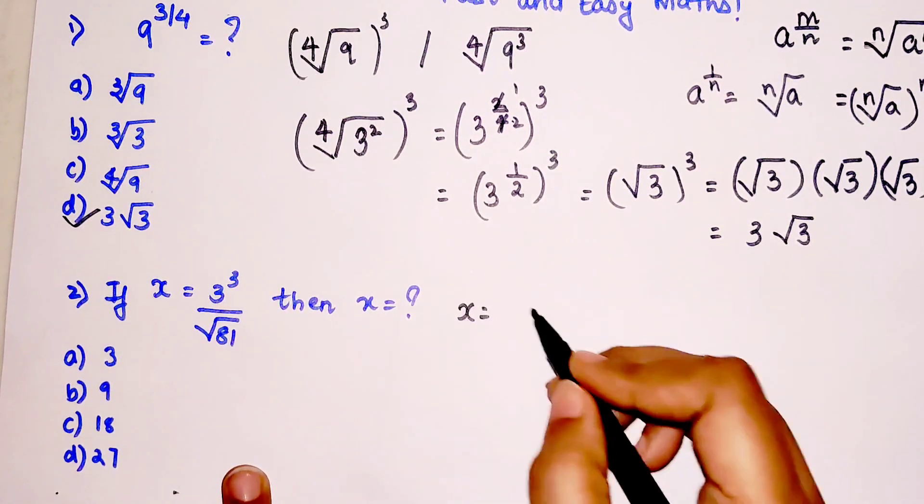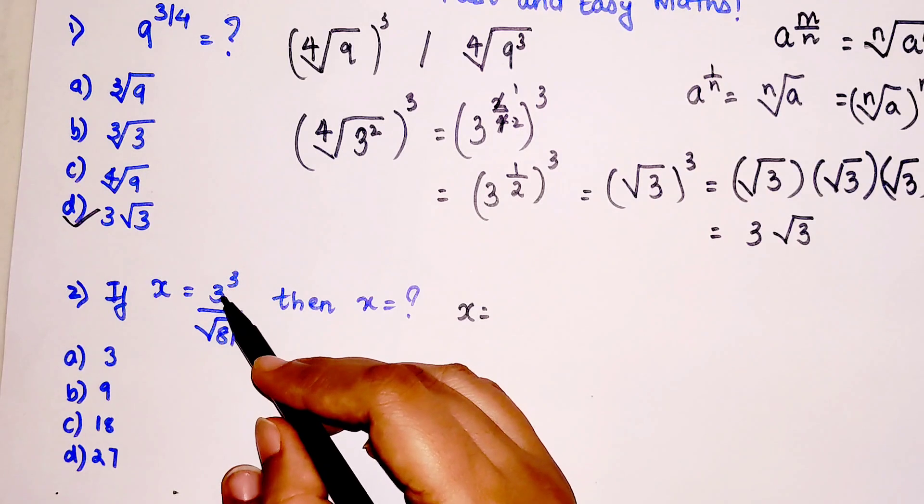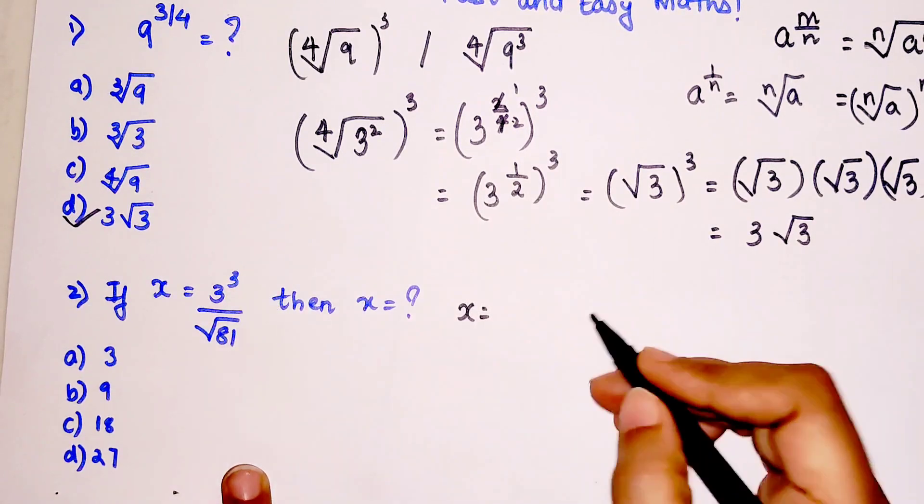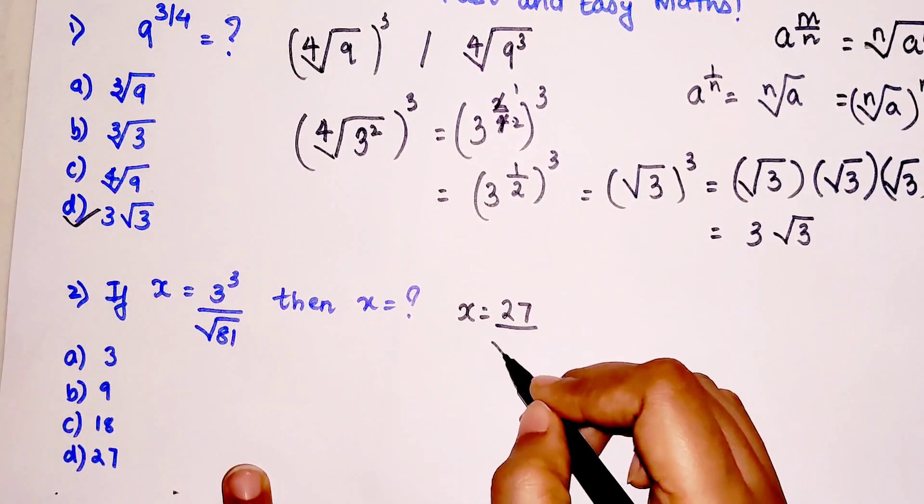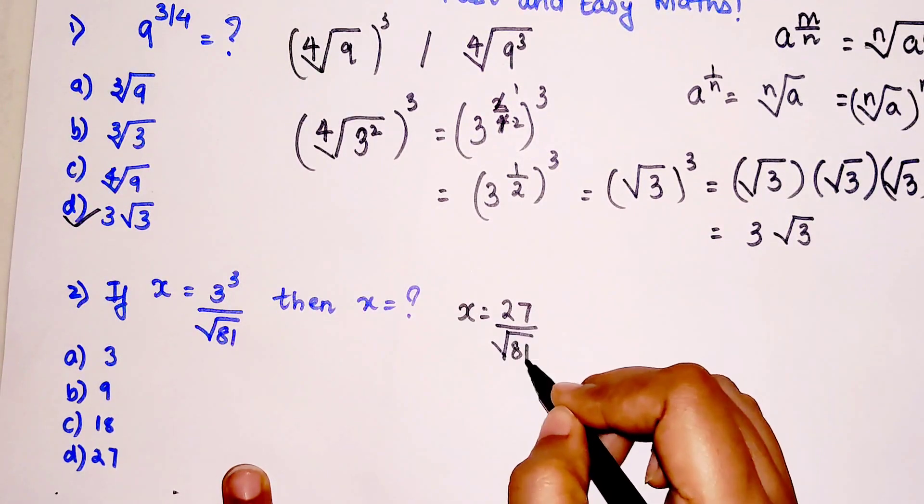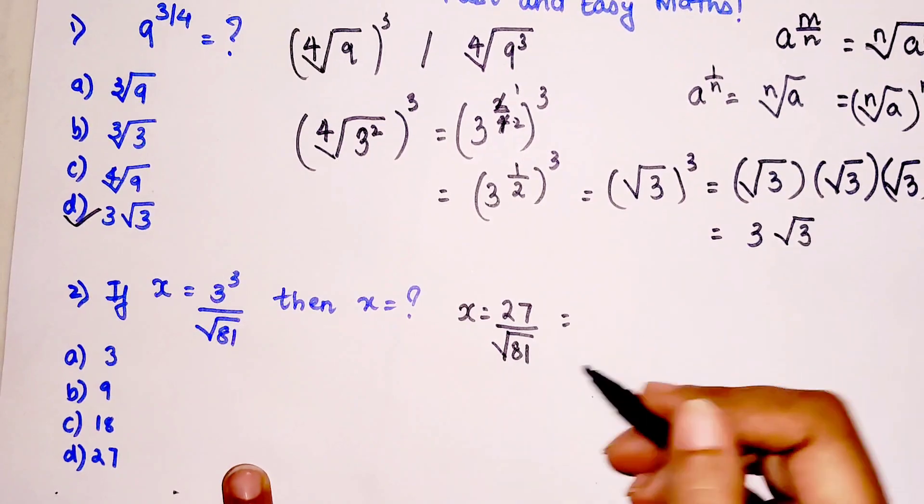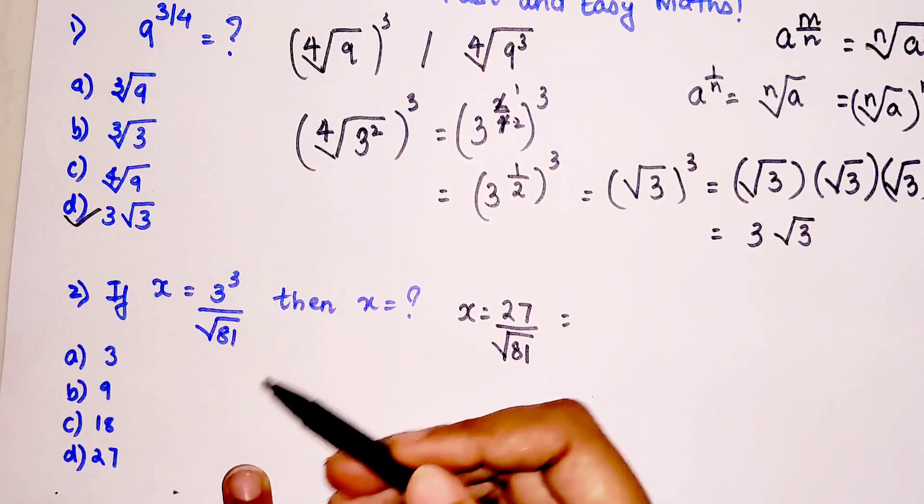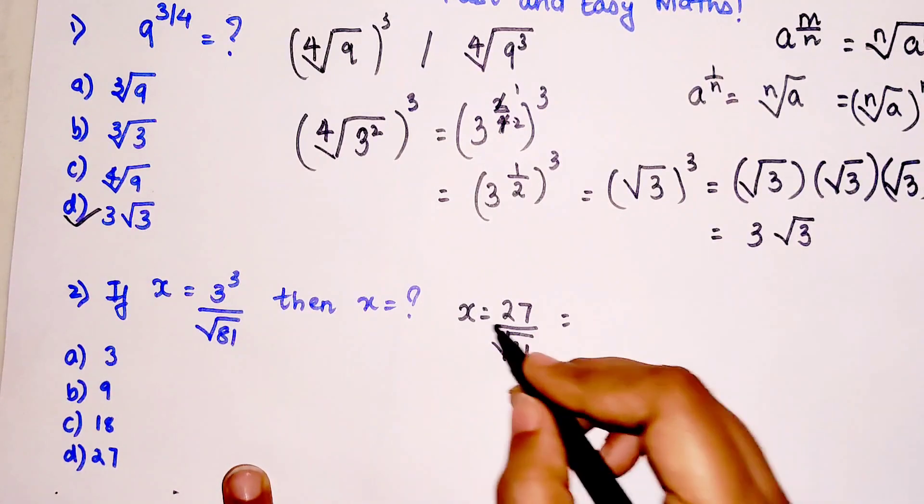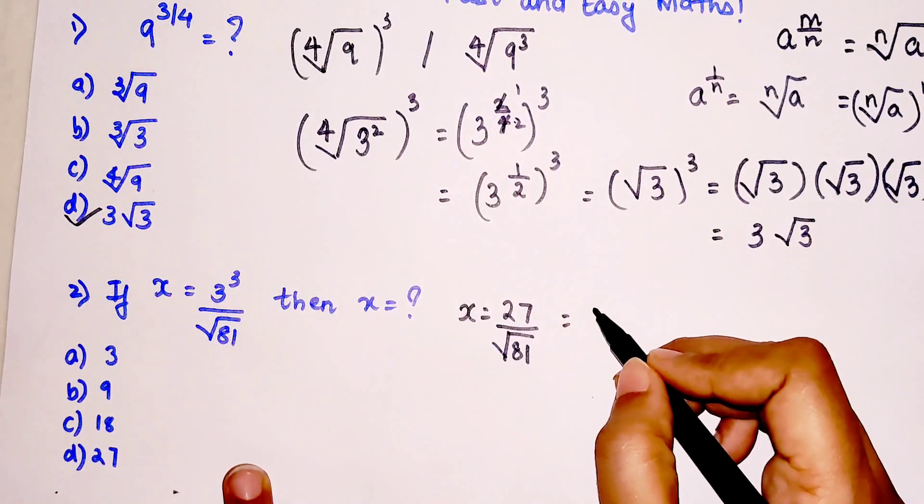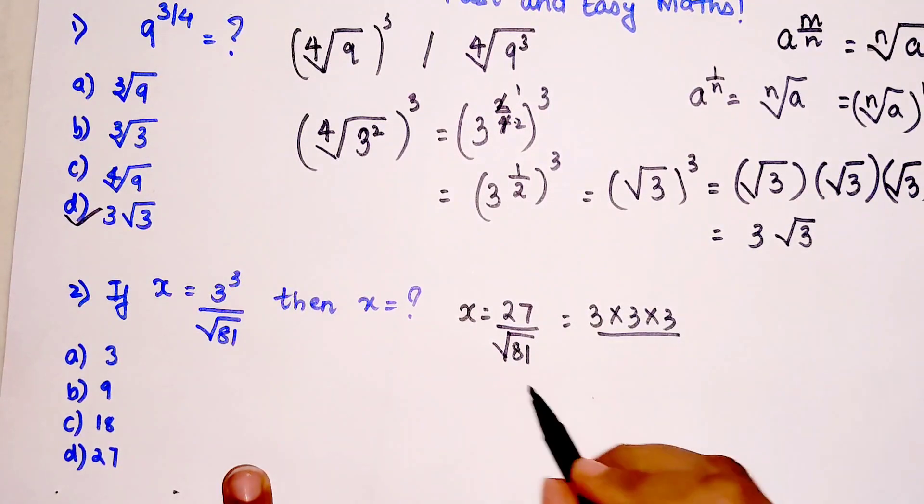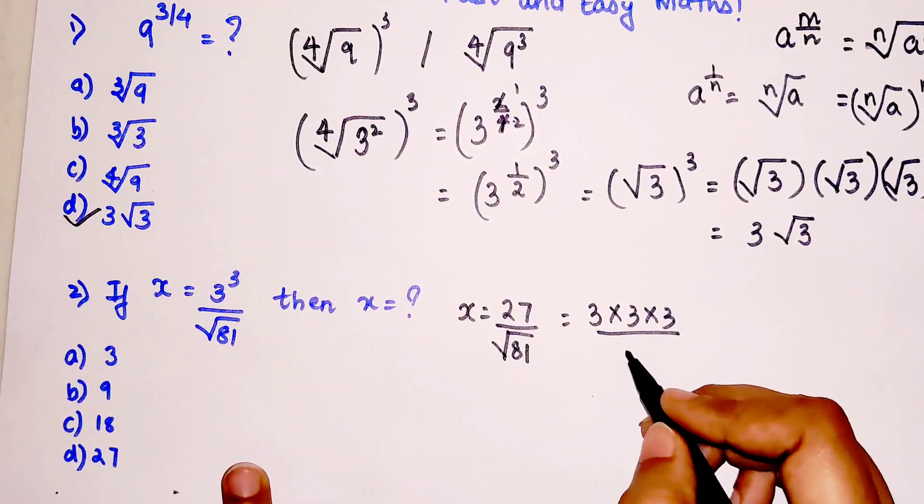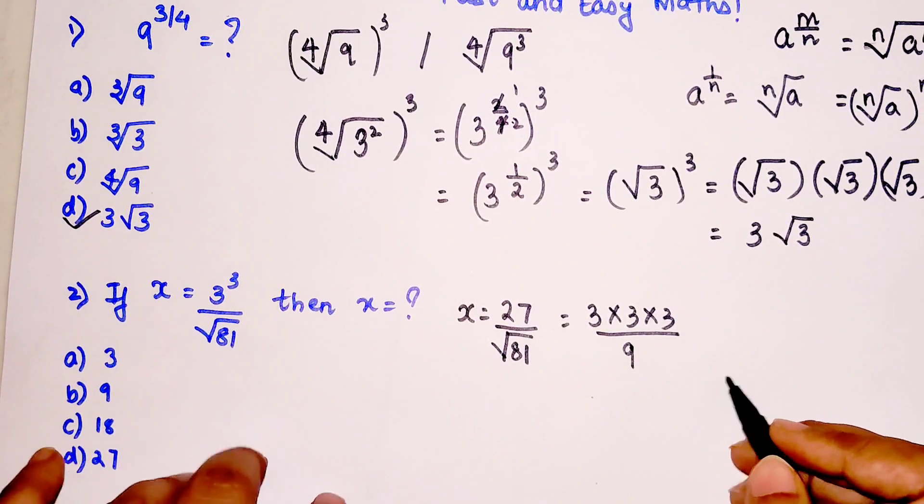A lot of you all start with making 3 raised to 3 as 27. This is basically what you would have done, and this is root of 81. But let's try - because 81 is also a multiple of 3 only - so instead of writing 27 we can just write 3 times 3 times 3. And square root of 81 we all know is nothing but 9.